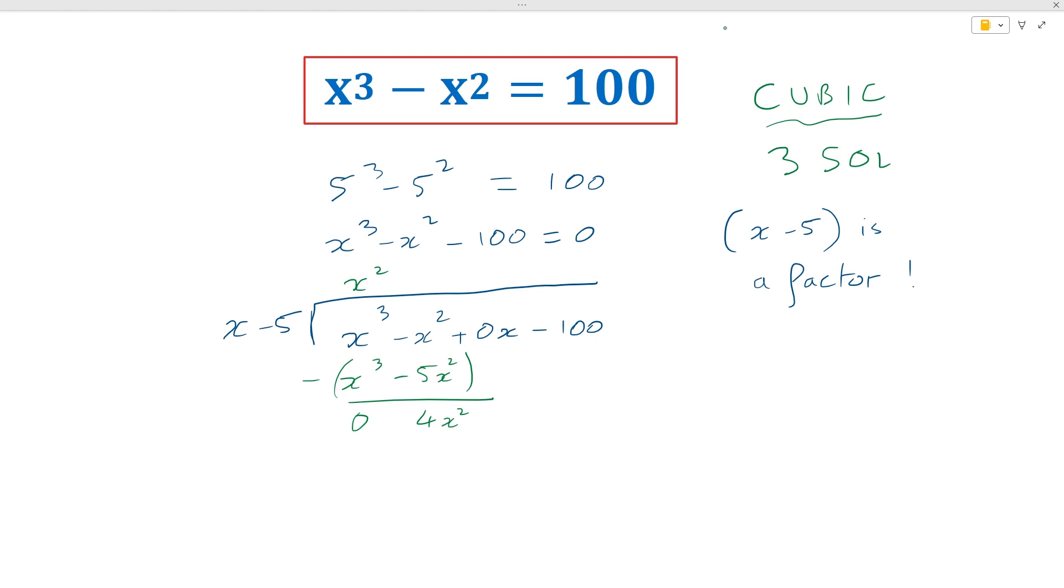And now just like you would do with long division, you can drop the 0x down and you ask yourself the same question. How many times does x fit into 4x squared? Well x times 4x is 4x squared, so we can say plus 4x. And so now we have 4x times x which is 4x squared, and 4x times negative 5 which is negative 20x.